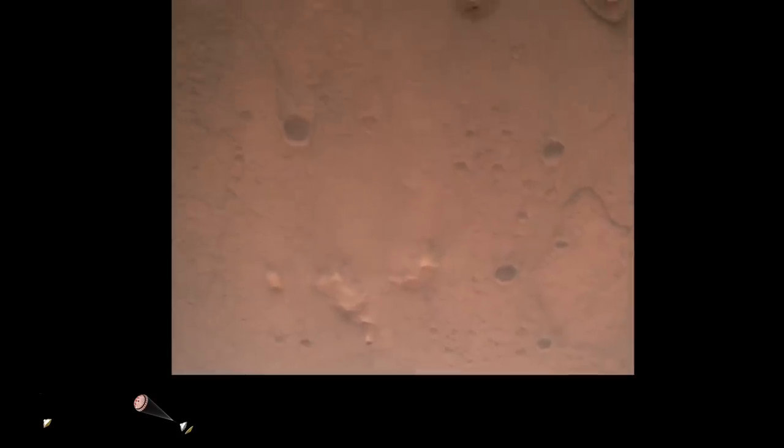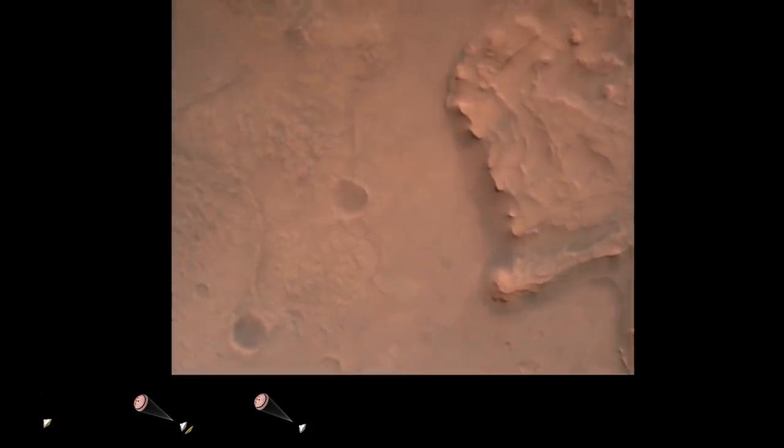Navigation filter converged, velocity solution 3.3 meters per second, altitude 7.4 kilometers. Now has radar lock on the ground. Current velocity is about 100 meters per second, 6.6 kilometers above the surface of Mars.